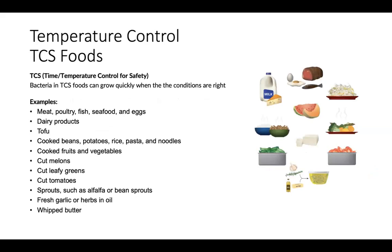Temperature control. TCS stands for Time and Temperature Control for Safety. Bacteria in TCS foods can grow quickly when the conditions are right. These foods will be focused on during a food safety inspection. Examples are meat, poultry, fish, seafood, and eggs; dairy products; tofu; cooked beans, potatoes, rice, pasta, and noodles; cooked fruits and vegetables; cut melons; cut leafy greens; cut tomatoes; sprouts such as alfalfa or bean sprouts; fresh garlic or herbs and oil; and whipped butter. If you have a question about whether or not a food is a TCS food, please ask your supervisor. It is important that all these foods are handled correctly.